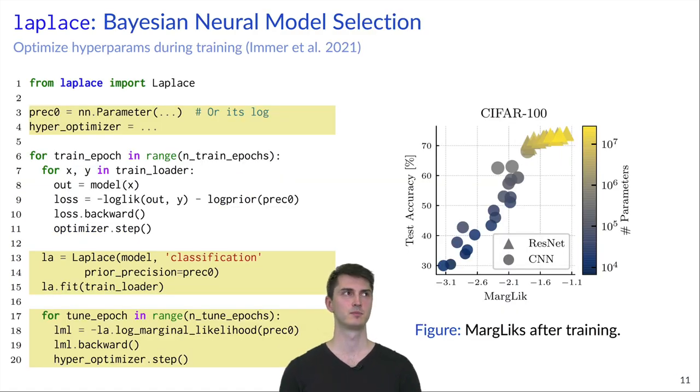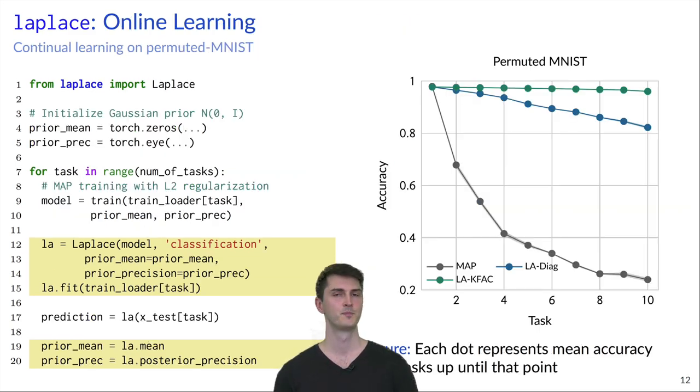A different setting is Bayesian model selection, where we want to optimize the hyperparameters during training. This is enabled by the library by providing a differentiable marginal likelihood approximation, which can be optimized during training. After training, you can see in the figure that the marginal likelihood actually strongly correlates with the test accuracy.